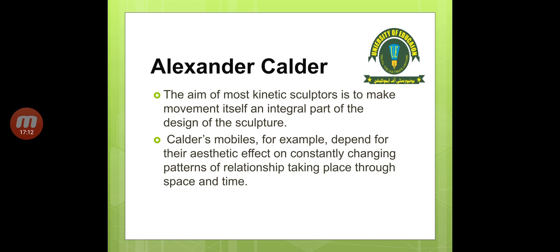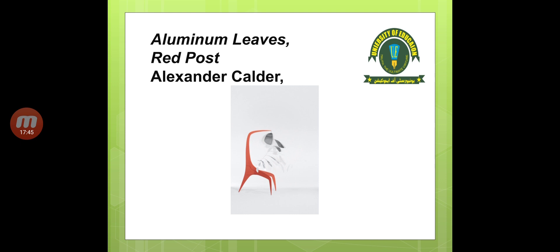The aim of most kinetic sculptors is to make movement itself an integral part of the design of the sculpture. Calder's mobiles, for example, depend for their aesthetic effect on constantly changing patterns of relationship taking place through space and time. 'Aluminium Leaves, Red Post' by Alexander Calder is an example — similar to the rod-with-hangings type of sculpture seen earlier.